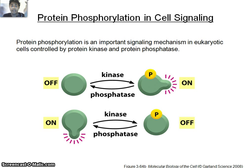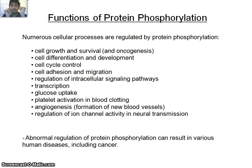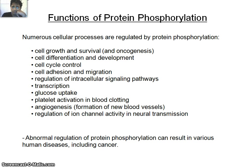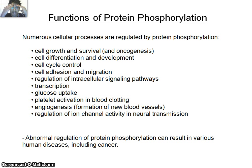These are the main players for activating or inactivating enzymes. Protein phosphorylation is involved in cell development, proliferation, and degradation pathways. Examples include cell growth and survival, differentiation, development, cell cycle control, cell adhesion and migration, regulation of intracellular signaling pathways, transcription, glucose uptake, platelet activation and blood clotting, angiogenesis, ion channel activity, and neural transmission.